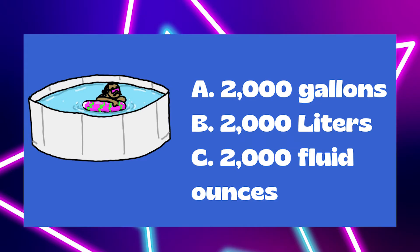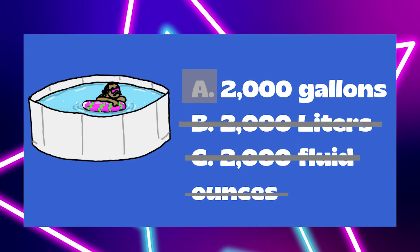Our first example — one of my favorites — mullet guy in the pool. Do you think that pool can fit A. 2,000 gallons, B. 2,000 liters, or C. 2,000 fluid ounces? Gallons makes the most sense for a large above-ground pool. We know that fluid ounces are very small, and a liter — you can find a liter bottle of soda at the grocery store, and that is smaller than a gallon. So it makes more sense to pick 2,000 gallons as our answer.